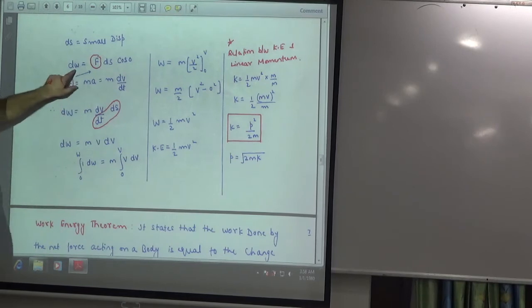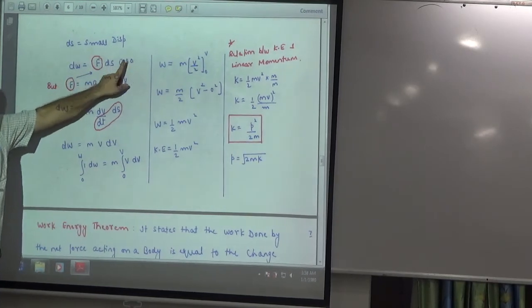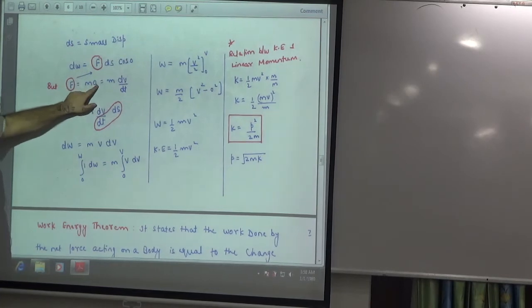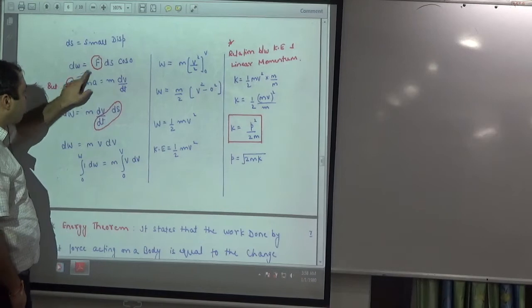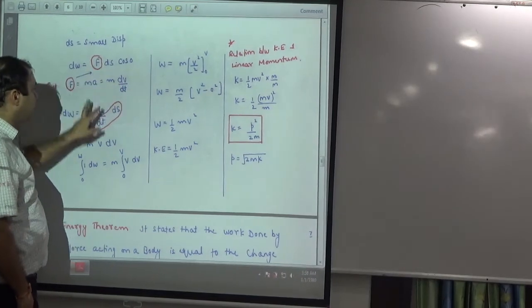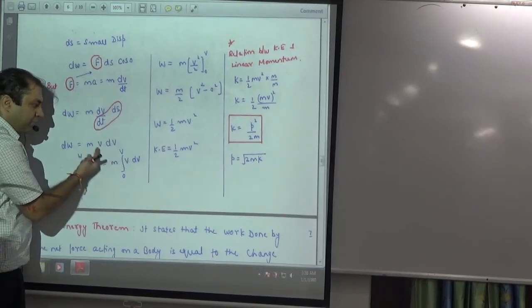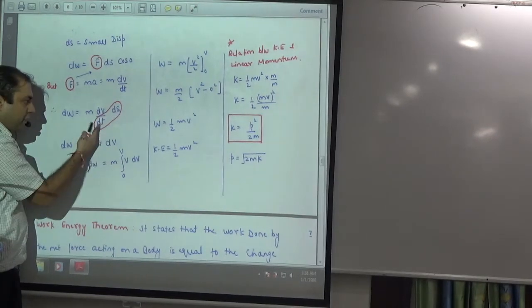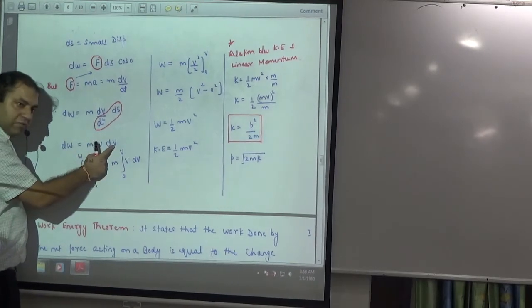So what will be small amount of work done? F ds cos 0. What is force? Mass into acceleration. Acceleration is dv by dt. This whole force has replaced m into dv by dt. ds by dt, what is velocity? V. So, m into v into dv. So small amount of work done has come in terms of small change in velocity dv.